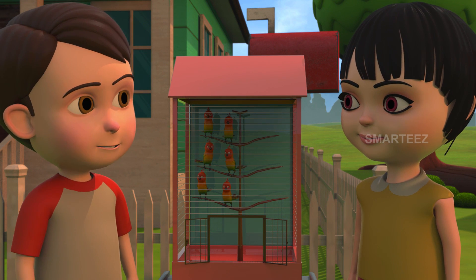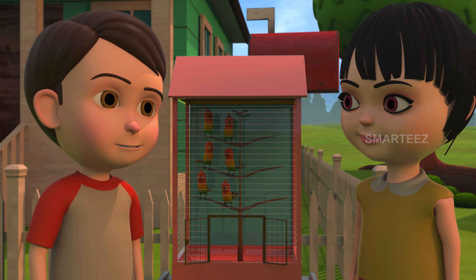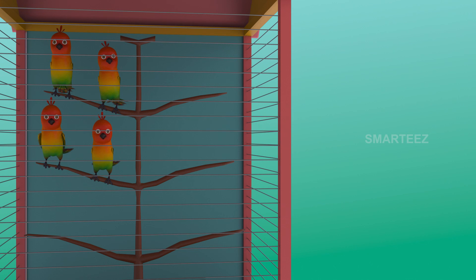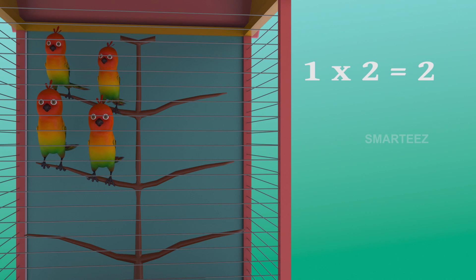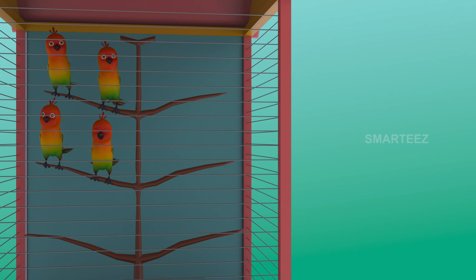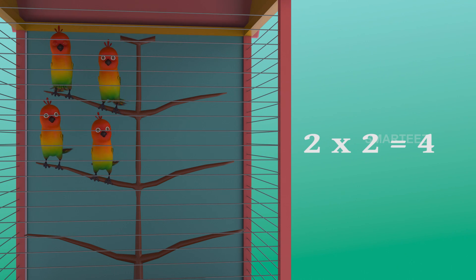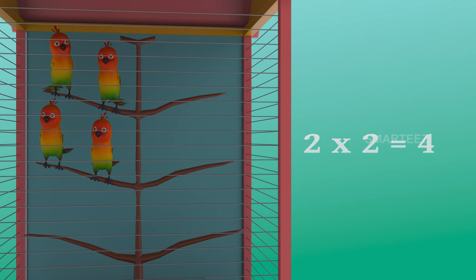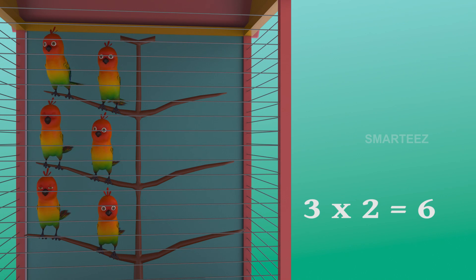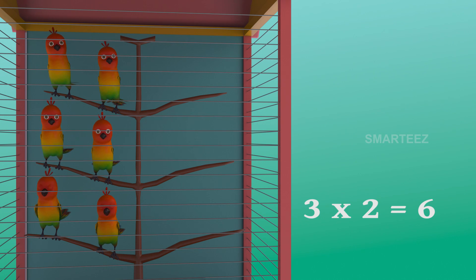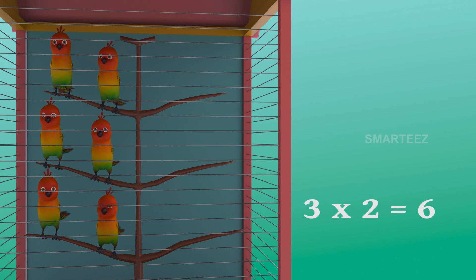So two sets of two parakeets make it four parakeets. Now the third set of two parakeets made it six. So three sets of two parakeets make it six parakeets.